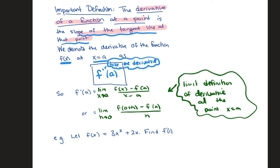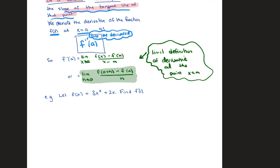Either limit formula is called the limit definition of the derivative at the point x equals a. If you're asked to use the limit definition of the derivative, you can use either one. The bottom definition — with h going to 0 — generalizes better to the next section, but both are valid. In the next example, we're asked to find f prime of 1, meaning we find the slope of the tangent line at x equals 1.